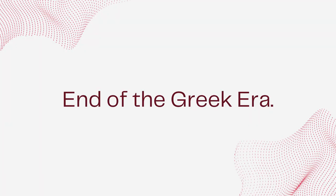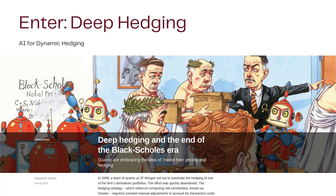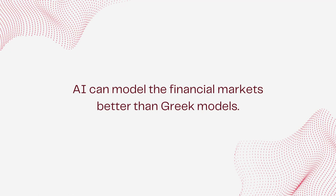I'd like to talk about the end of the Greek era and the rise of AI, known as deep hedging. Deep hedging emerged very early at JP Morgan, where researchers are doing research on how to use AI to hedge portfolio risks without assuming anything about how the market works — just giving an AI a bunch of data and telling it to learn directly from the data. AI can model the financial markets much better than traditional stochastic models by learning directly from the data, though these models have really wrong assumptions about how the market works.